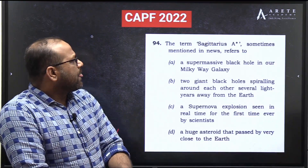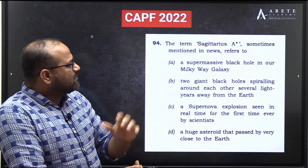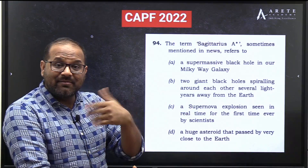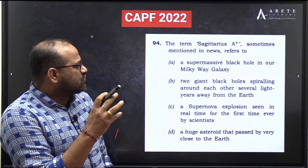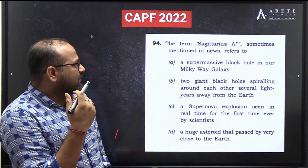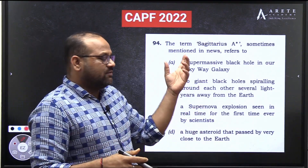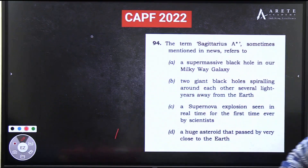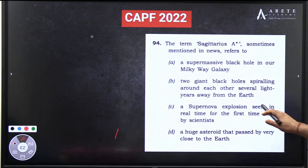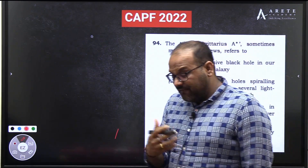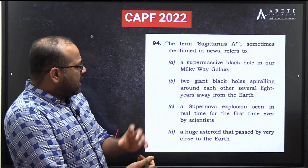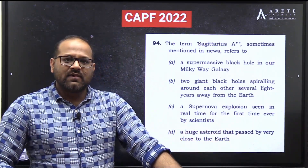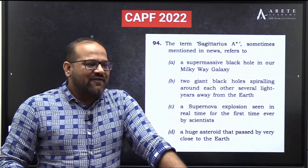They have also asked about gravitational lensing. The options are: A) a supermassive black hole in our Milky Way galaxy, B) the name for two giant black holes spiraling around each other several light years from Earth, C) a term denoting a supernova explosion seen in real time for the first time by scientists, D) a huge asteroid that passed very close to Earth. UPSC works on every option very thoroughly.